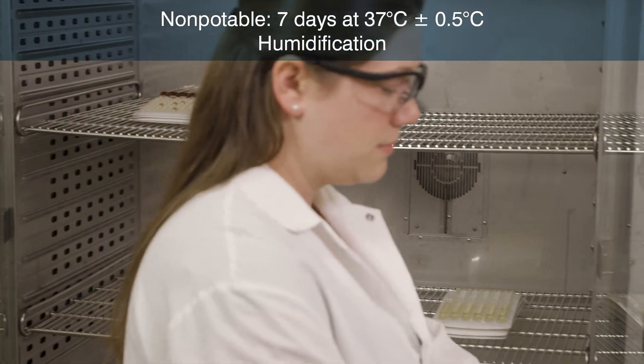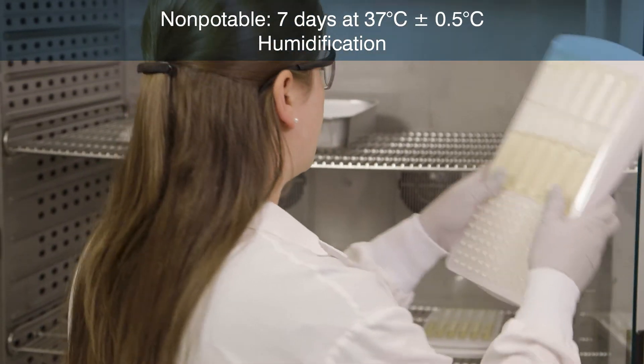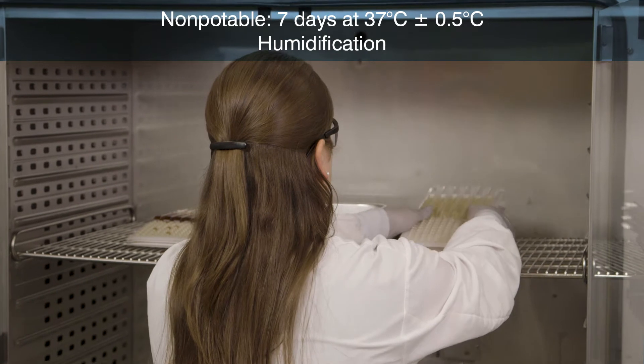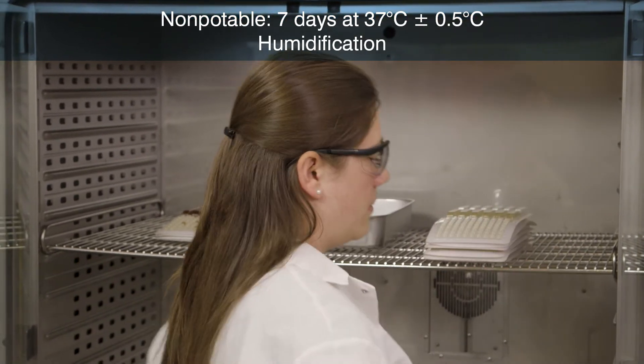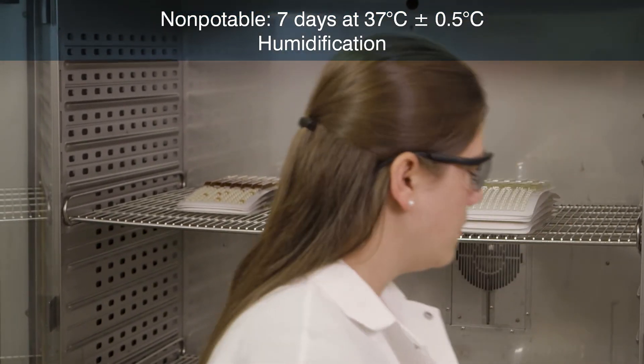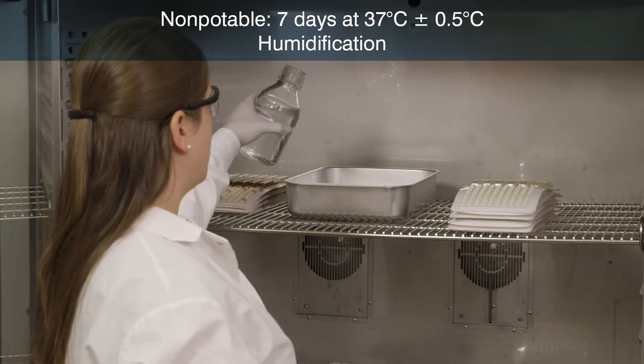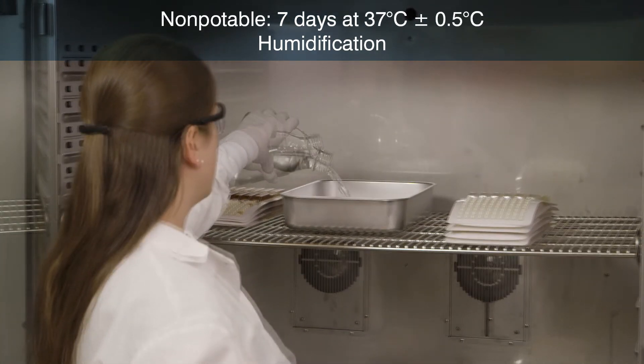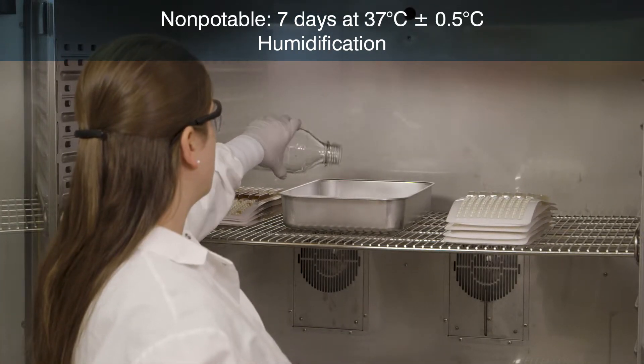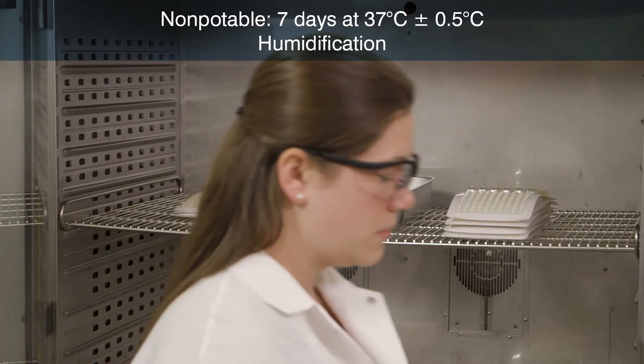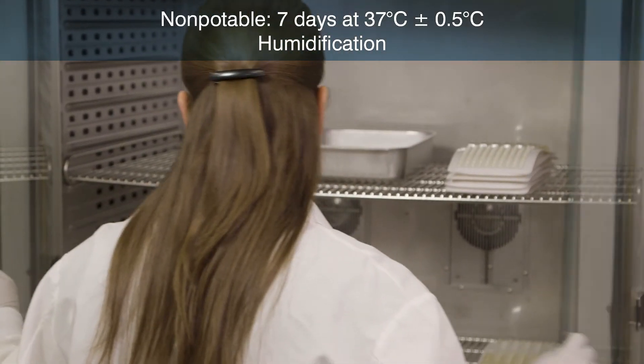Incubate the sealed tray paper side down for 7 days at 37 degrees centigrade plus or minus 0.5 degrees centigrade. To prevent trays from drying out, humidify the incubator. If stacking trays, alternate tray direction so large wells are placed above small wells.